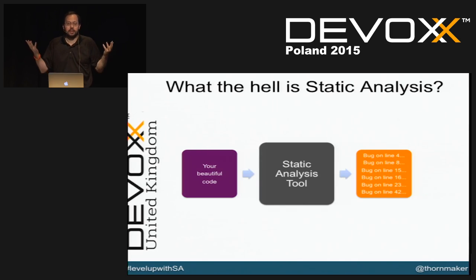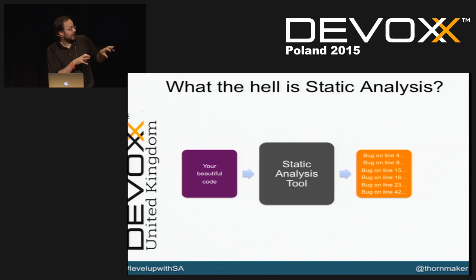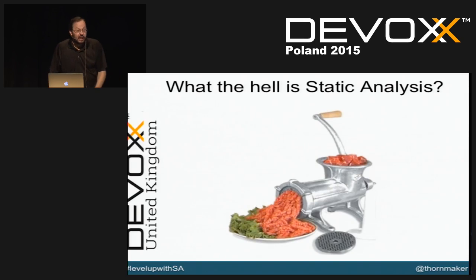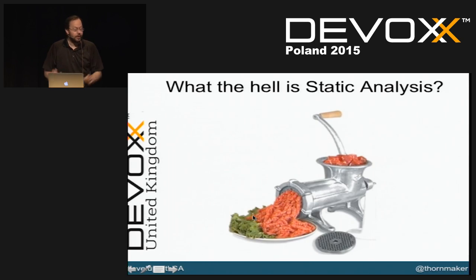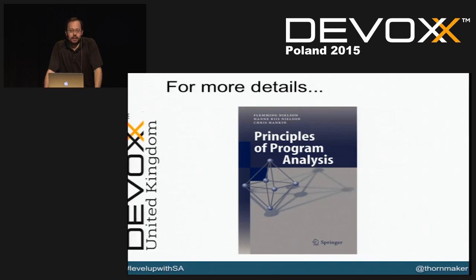So what is static analysis? You take your code, input it into the static analysis engine, and what you get out is a list of issues — on this line you have a bug, on that line you have a bug. Inside the analysis engine, there's a lot of complicated analysis going on. A good engine will mimic your compiler in wanting to understand the abstract syntax tree and the control flow graph of your application, then model different states to see which code paths are accessible.